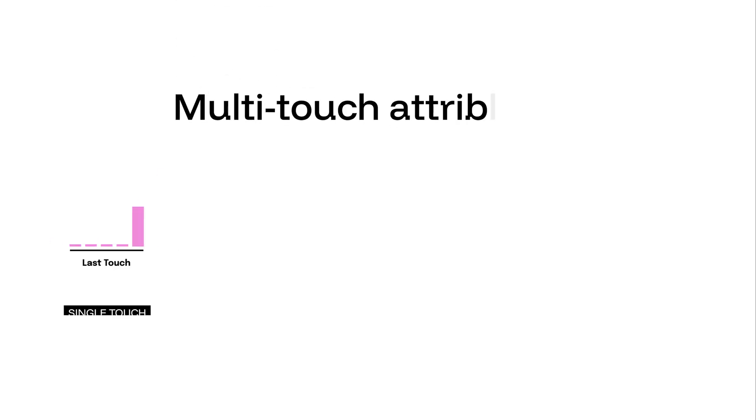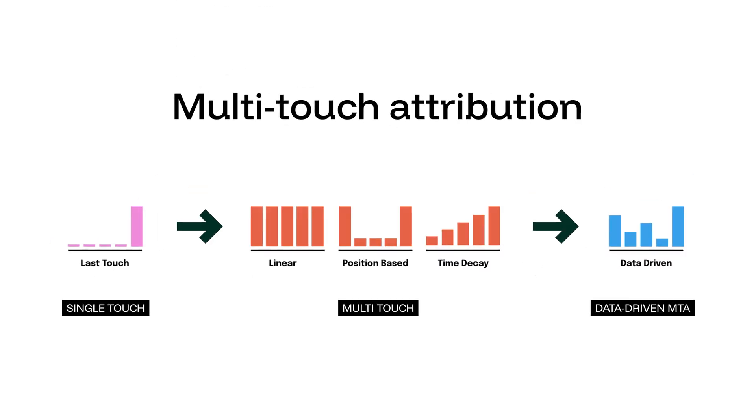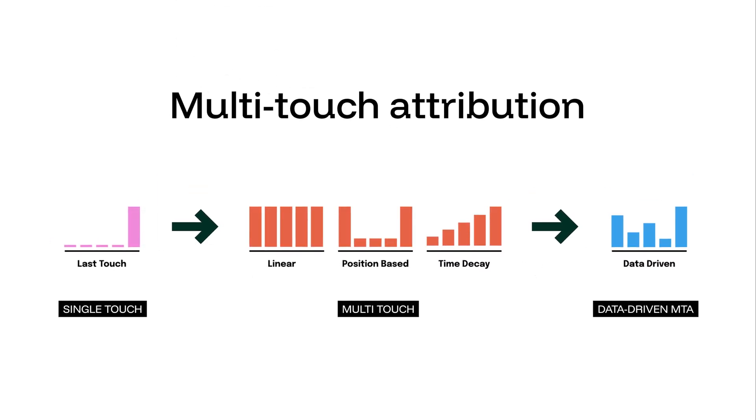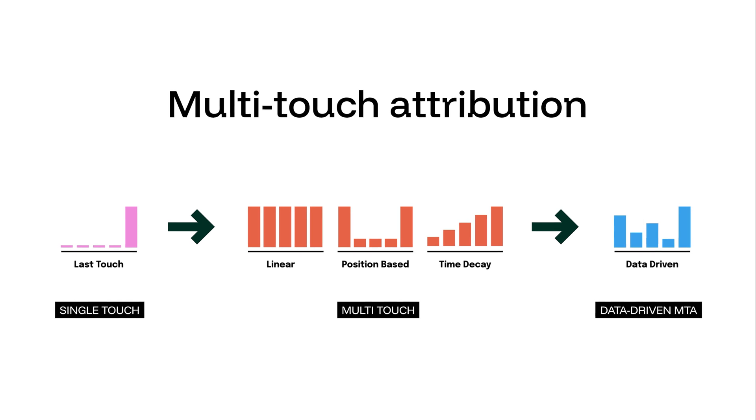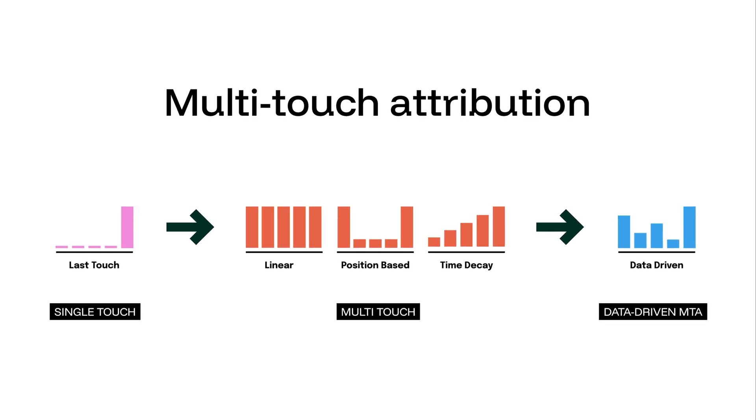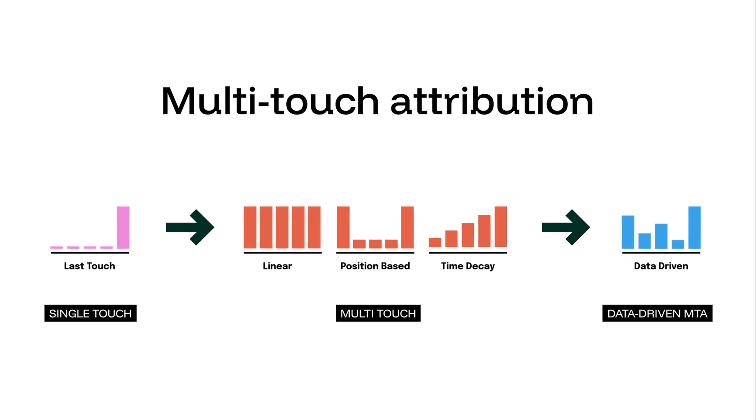Data-driven multi-touch attribution is a method used to evaluate the effectiveness of various marketing touchpoints that a customer interacts with before making a purchase. Unlike traditional single or multi-touch models such as last click, linear, or position-based, data-driven multi-touch attribution provides a more nuanced understanding of the customer journey by considering all interactions, including non-converting ones.